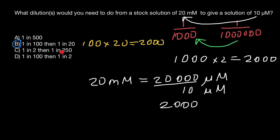But let's check the rest. Answer C gives us a 2-fold dilution and then 250-fold, so we get a 500-fold dilution total. Answer D gives us 100-fold and then 1 in 2, so we get 200-fold dilution. Therefore, the only correct answer that gives us a 2,000-fold dilution is answer B.